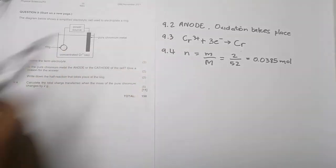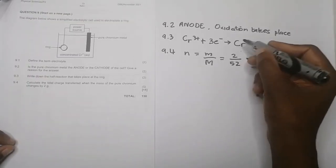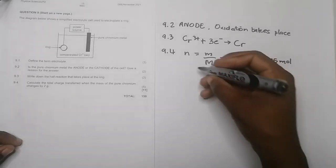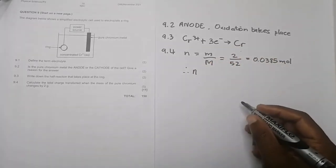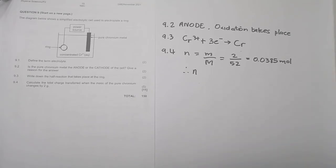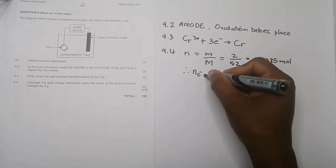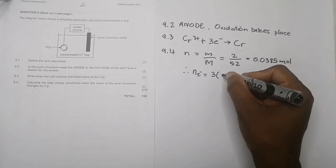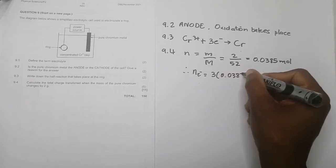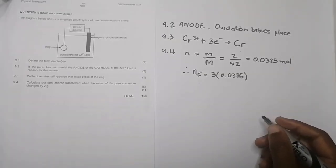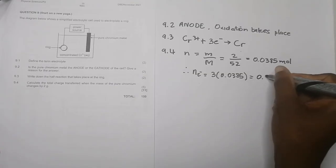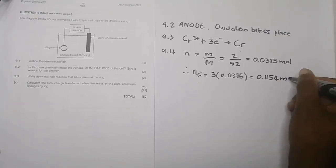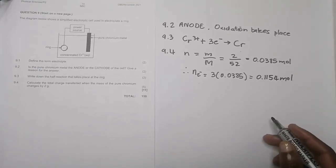Note this: when we're talking about charge, we're looking at electrons. Look at our reaction - for every one chromium that I form, how many moles of electrons would I have used? Three moles of electrons. So the number of moles of electrons would be three times 0.0385, which equals 0.1154 moles of electrons.